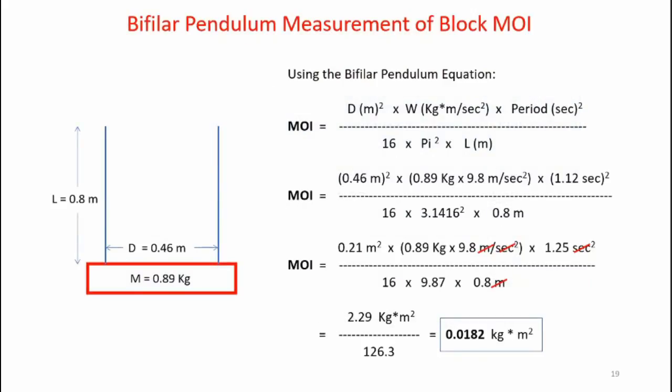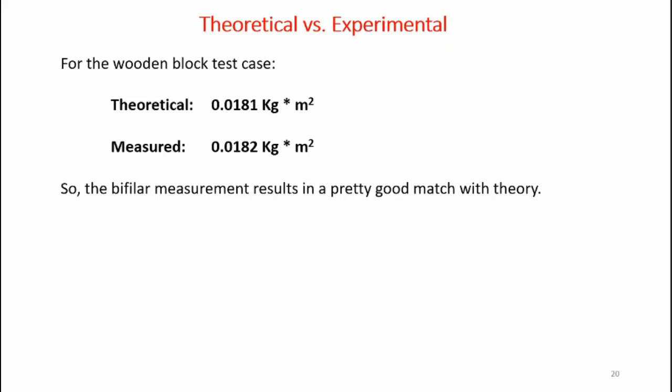So now what I did was I took that time and the various dimensions associated with my test and put them into the MOI calculation. And you see that I got a calculated experimental MOI of 0.0182 kilograms meters squared. So here's a comparison between our theoretical and experimental MOI values. Now for this particular wooden block test case the theoretical value was calculated to be 0.0181 kilograms meters squared. Now using the bifilar pendulum we measured an MOI of 0.0182 kilograms meters squared. So the bifilar measurement results in a pretty good match with the theory.